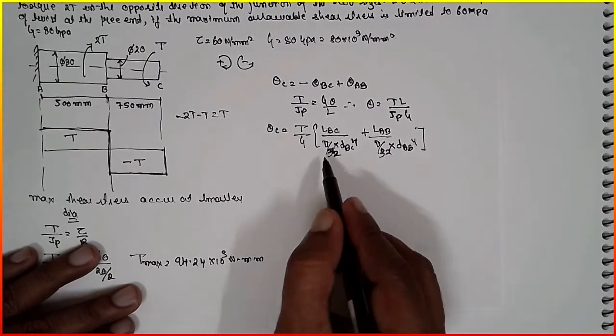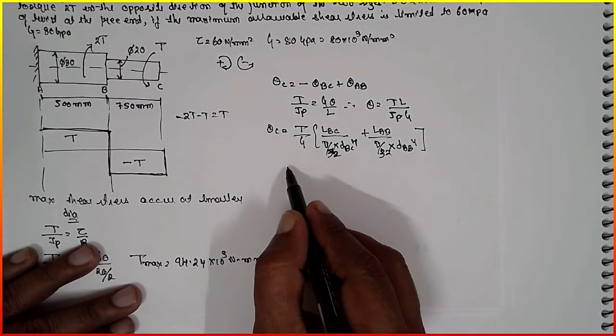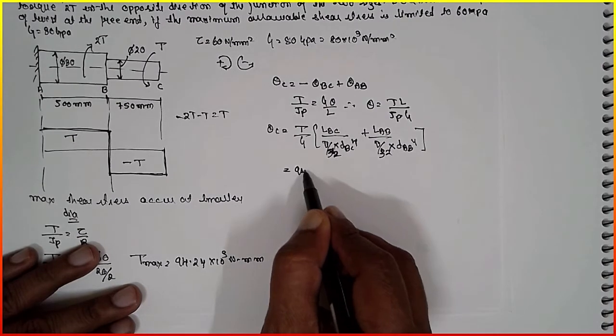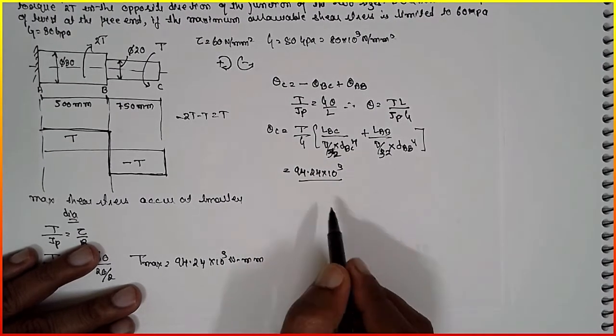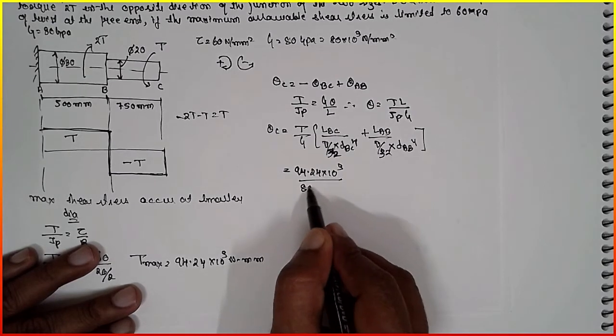That means if I take 32 also outside, it can be written as 94.24 into 10 raised to 3 divided by G is 80 into 10 raised to 3.